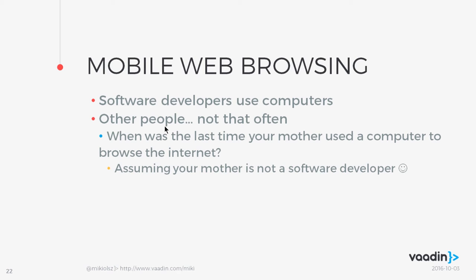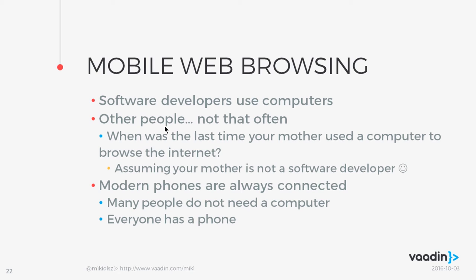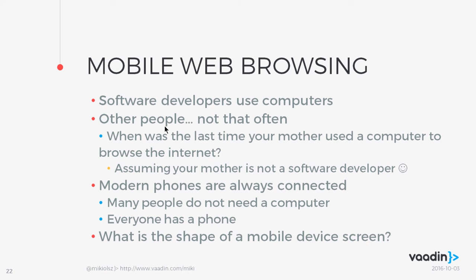Why are these questions important? Software developers use computers. Other people — those not being software developers — don't use computers much. When was the last time your mother used a computer to browse the web? Modern phones are always connected to the internet, and most people have the internet in their pocket. This is how most people connect to the internet and browse stuff — it's the phone, not the computer anymore. Many people do not even need a computer because everything you will ever need is probably available as an app. The important thing is: what's the shape of a mobile device screen? Well, it's rectangular but not horizontal — it's vertical.